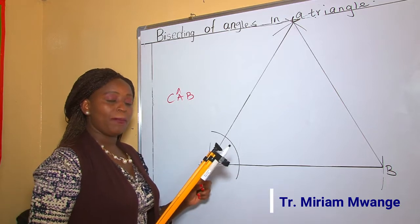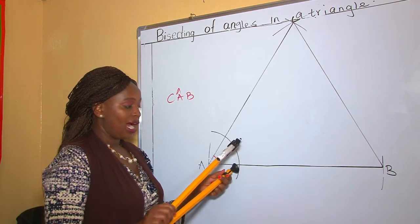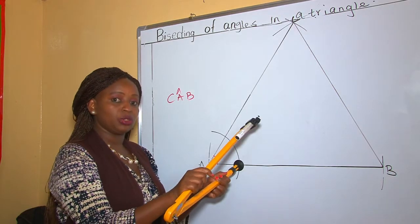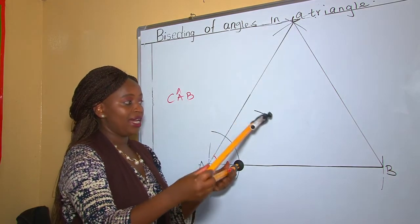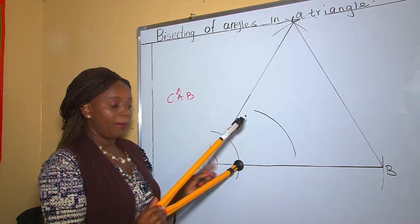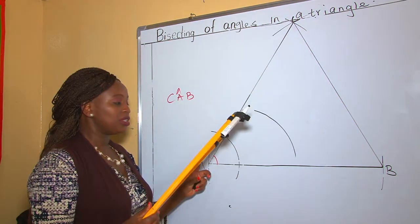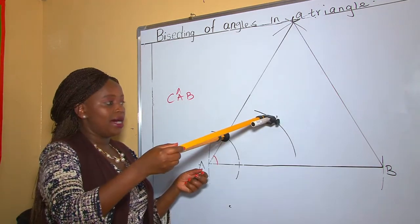Now we need to come up with other arcs. At this given point, you are at liberty to choose a radius of your wish. So that's my radius. Make an arc. Maintaining the same radius, come to the other line that makes that angle and make an arc.